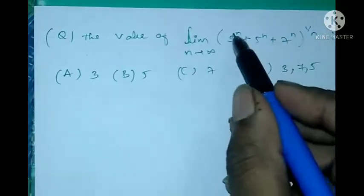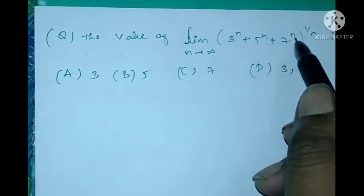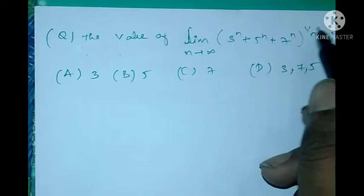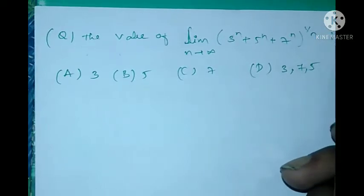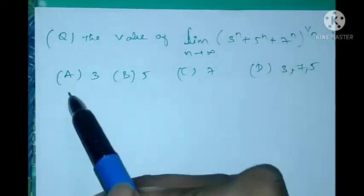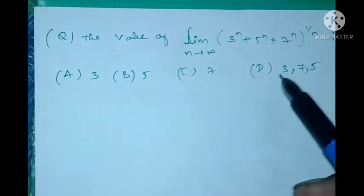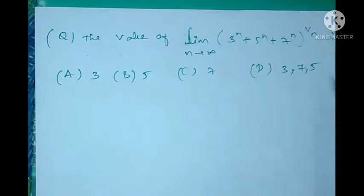The value of the limit as n tends to infinity of (3^n + 5^n + 7^n)^(1/n) — they asked the value of this limit. Option A is 3, option B is 5, option C is 7, and option D is 3, 7, 5.